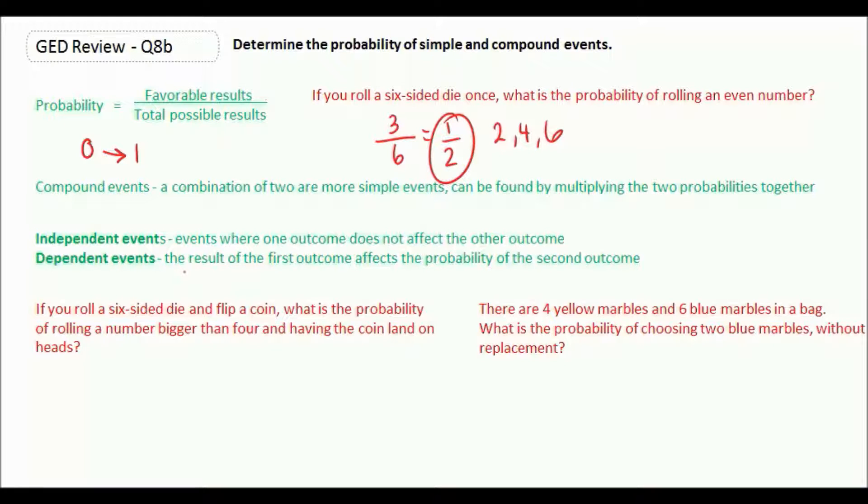We have both cases demonstrated here. If you roll a six-sided die and flip a coin, what is the probability of rolling a number bigger than four and having the coin land on heads? Now, if we're rolling a six-sided die and flipping a coin, those two things are totally separate. Flipping a coin is not going to affect rolling a die, and rolling a die is not going to affect flipping a coin. So these are independent events. We can just figure out each of the probabilities and then multiply them together to get our answer.